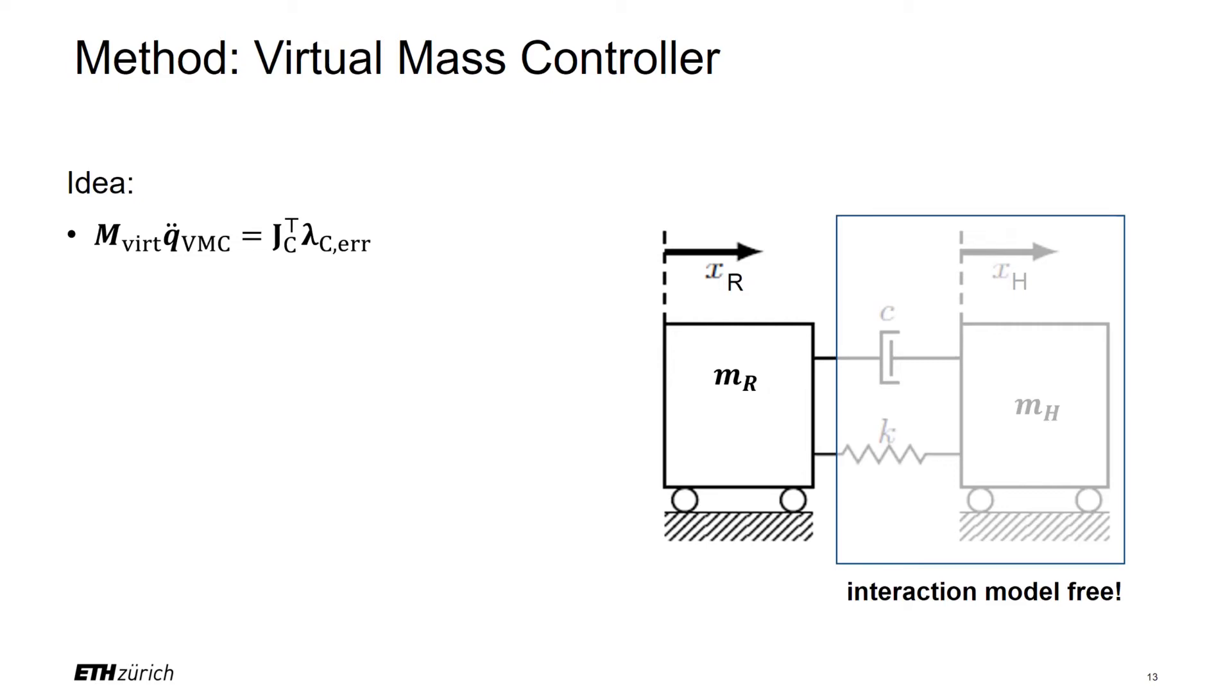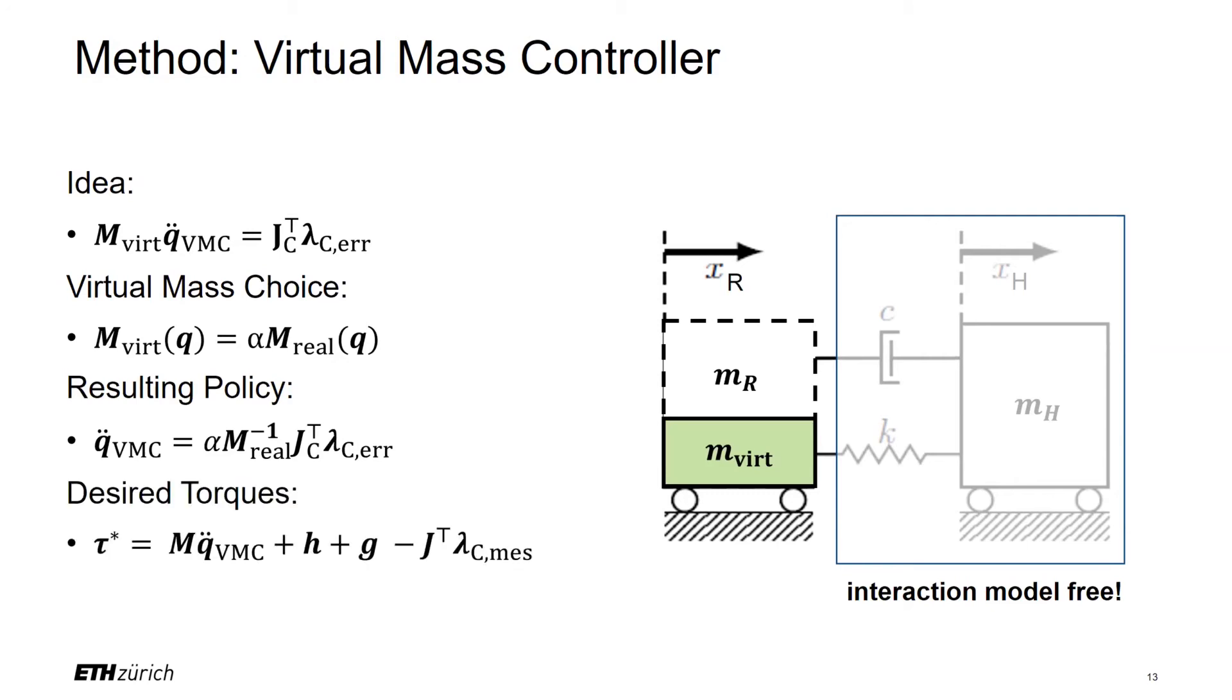In previous work, we have shown that Coriolis, centrifugal and gravitational terms can be well compensated by the feedback linearization. With this control approach, we want to reduce the robot's inertia that is felt by the user. It is known that it is not possible to compensate the inertia fully. Hence, we want the system to render a pure virtual mass to interaction force errors. The real reflected inertia changes significantly depending on the configuration of the robot. Hence, tuning one static virtual mass for all configurations would not lead to a good performance. Hence, we decide to use the downscaled real mass matrix as virtual mass matrix. This results in the following control policy. And accordingly, the joint torques are computed as follows. With perfect model knowledge, this controller would track the interaction forces while the interaction force error diminishes with the dynamics of the virtual mass.